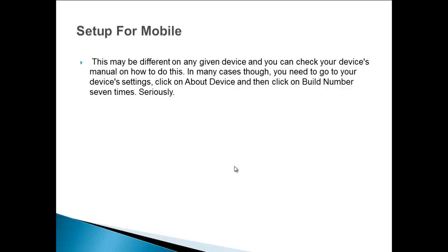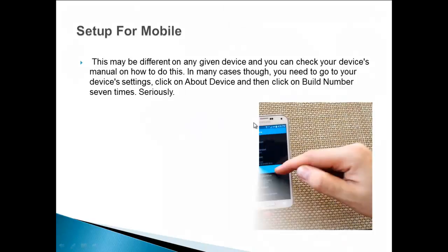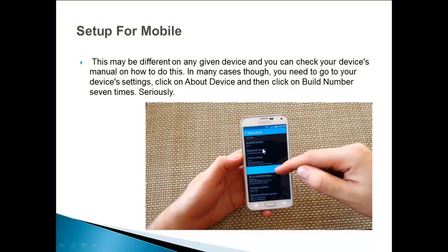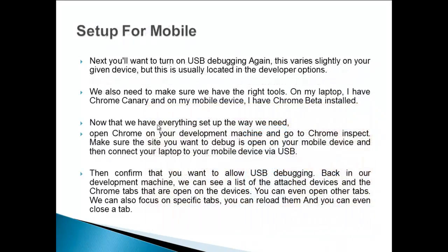In many cases you need to go to your device's settings, click on About Device, and then click on Build Number seven times. In this example you can see the Samsung mobile Android version and the build version — click on it.